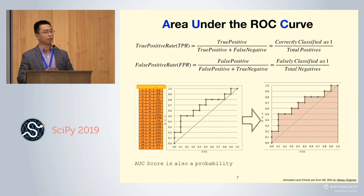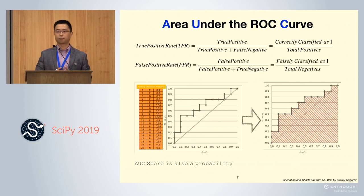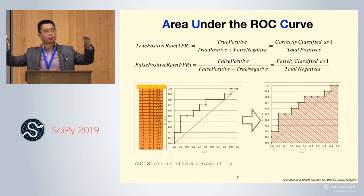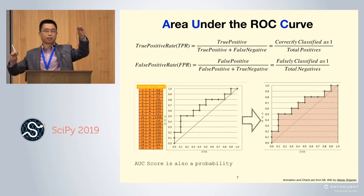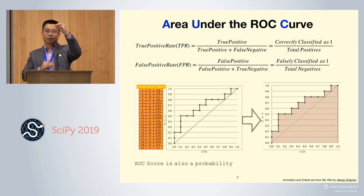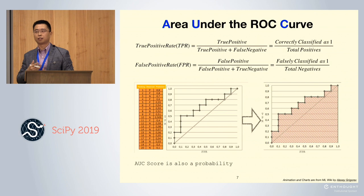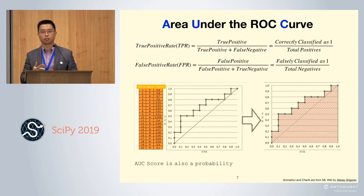AUC score has another name called C-statistic. It is a probability — it measures if you randomly pick one positive observation and one negative observation, the chance the positive one has a higher forecasted probability than the negative one. Again, it doesn't care about the probability value. It only cares about the ranking. That is the reason AUC score is not a good metric in probabilistic classification problems.